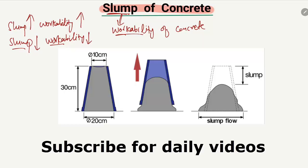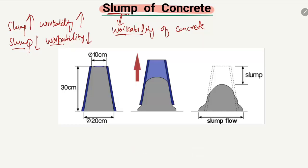Now how we do the slump test in order to measure the workability of the concrete. A standard method is used where a standard cone is used. You see here — this blue shape is a standard cone. The diameter of the bottom is 20 centimeters, the top diameter is 10 centimeters, and the height of the cone is 30 centimeters. Fresh concrete is poured into this cone to check the workability.